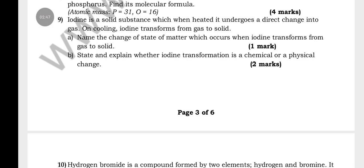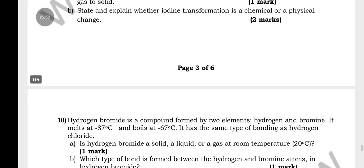Number nine: Iodine is a solid substance which when heated undergoes a direct change into gas. On cooling, iodine transforms from gas to solid. Explain whether iodine transformation is a chemical or physical change.